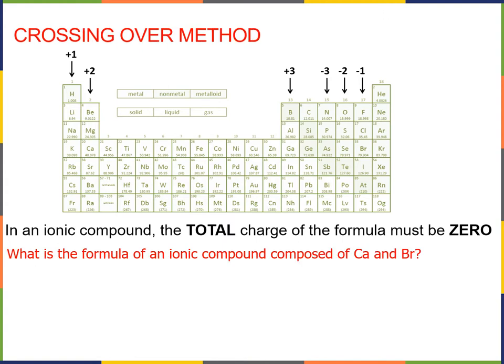So I put a subscript two next to the bromine, which means that there are two bromide ions for every one magnesium ion. Okay, is there a general way to figure this out without having to solve it on the fly for different combinations of positive charges and negative charges? Well, there actually is. And we will call this the crossing over method.